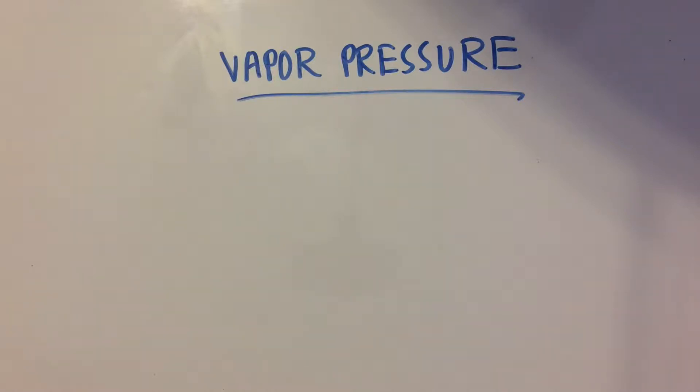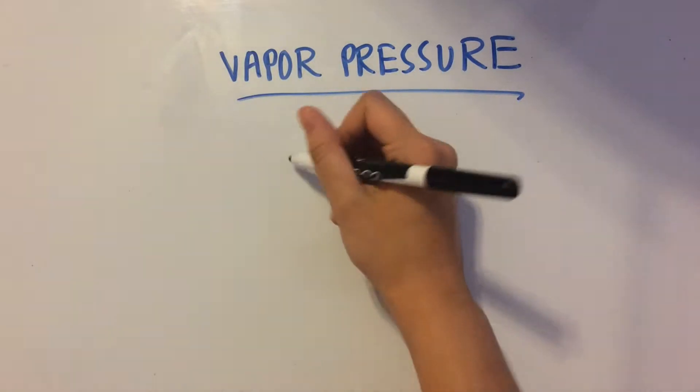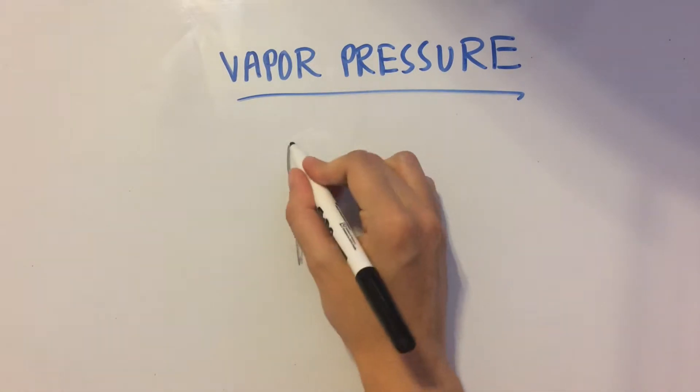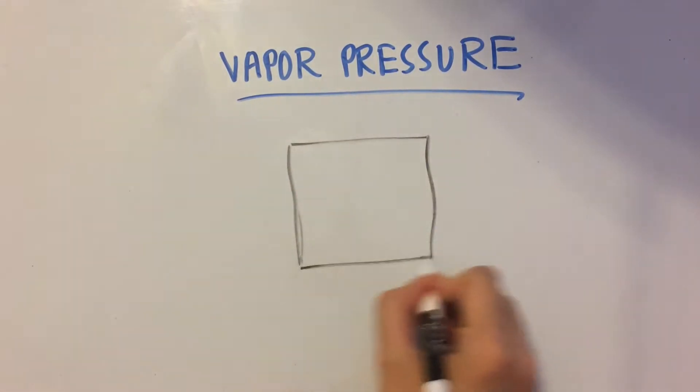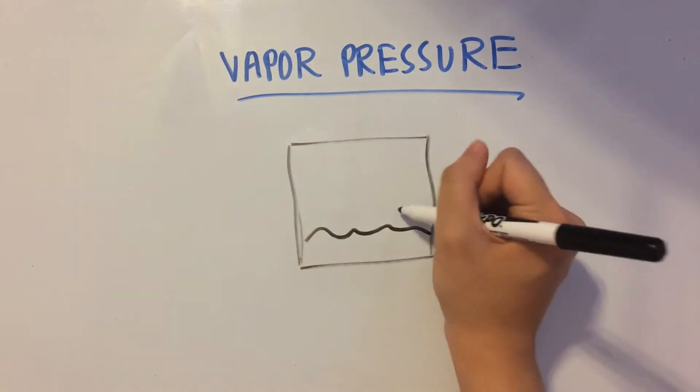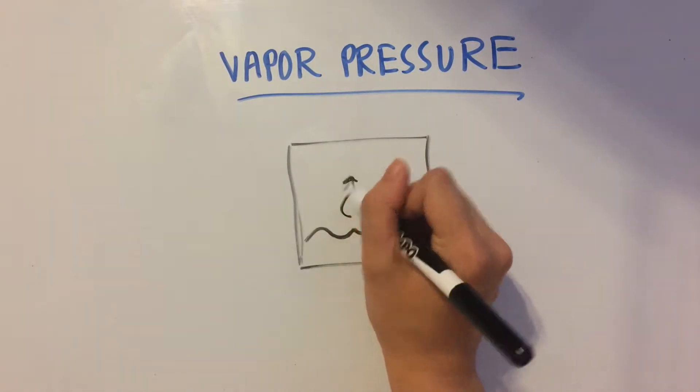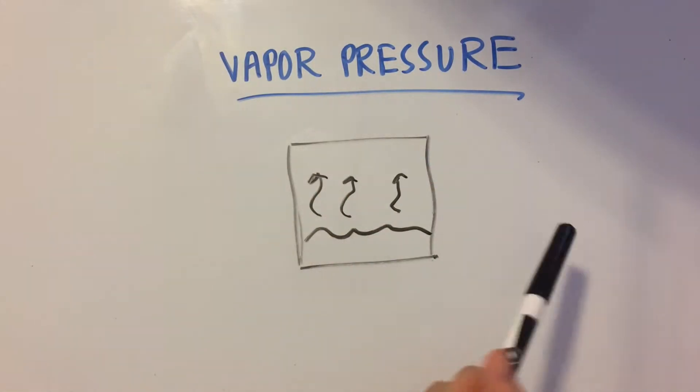Vapor pressure is the amount of pressure that results when you have a liquid in a container and some of the liquid evaporates into a gas, and that gas creates what is known as vapor pressure.